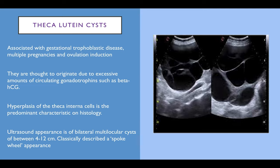Theca lutein cysts are associated with gestational trophoblastic disease such as molar pregnancy, multiple pregnancies, and ovulation induction. They are thought to originate from excess circulating gonadotrophins — beta-hCG — caused by hyperplasia of the theca interna cells. On ultrasound the appearance is of bilateral multilocular cysts between 4 and 12 centimetres, quite thin-walled, and described as having a spoke-wheel appearance.